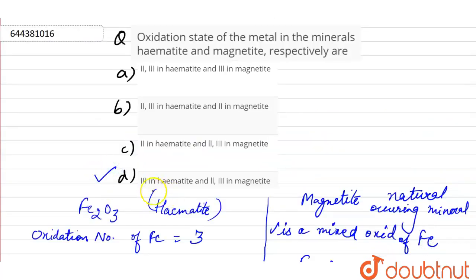So option D is correct where oxidation number 3 in hematite and 2 and 3 oxidation in magnetite.